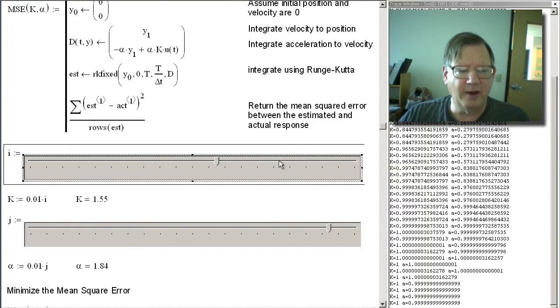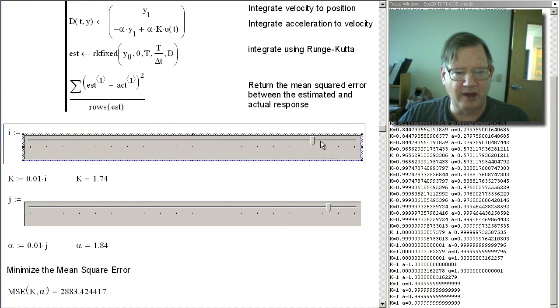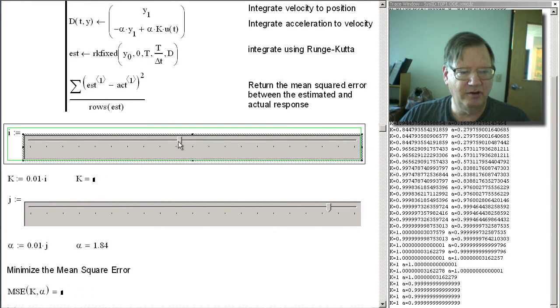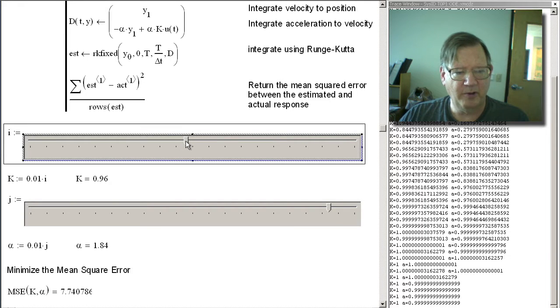And you can see that if I move my gain, oops, moved it too far. If I move it this way, the mean squared error goes up. And if I move it closer to 1, you can see that it's going down. And if I move it below 1, you can see it starts to move up again. So if I move this to where it's a minimum, which is going to be when gain's equal to 1. See, I've got one parameter identified.